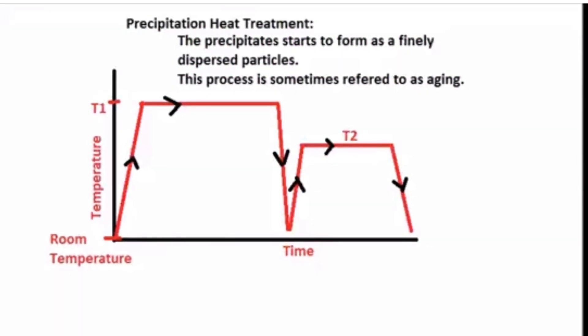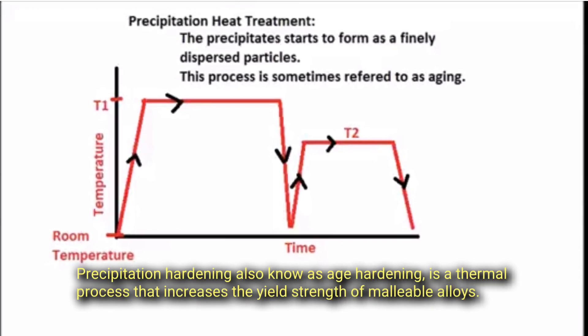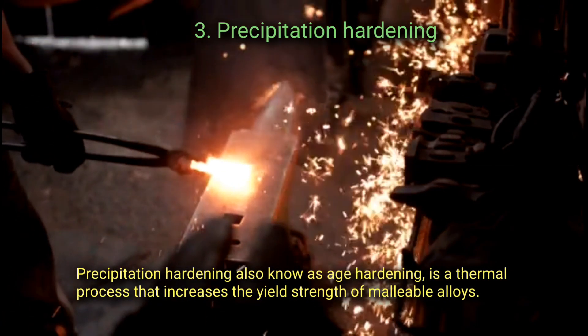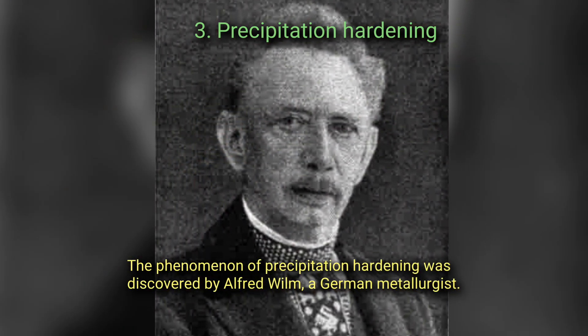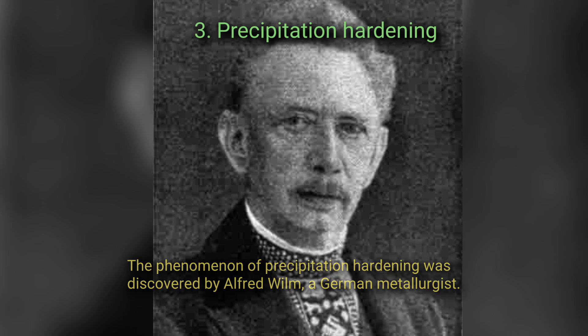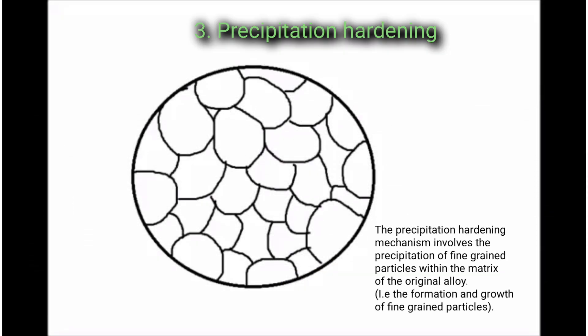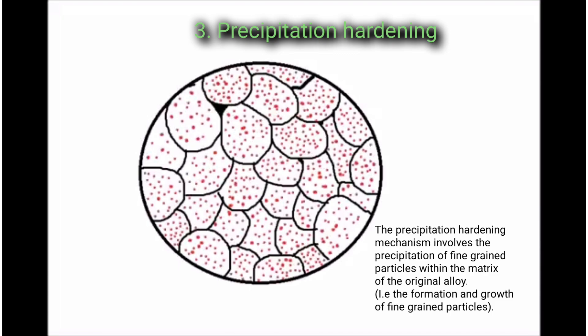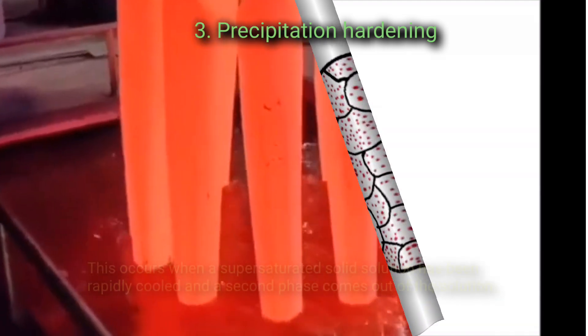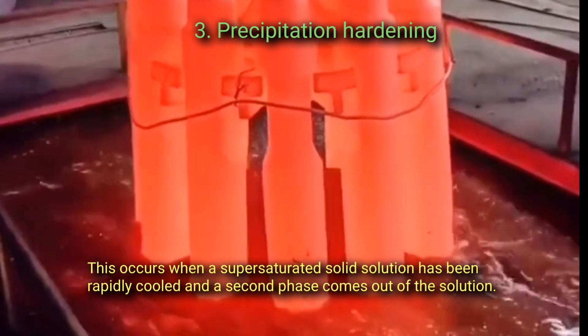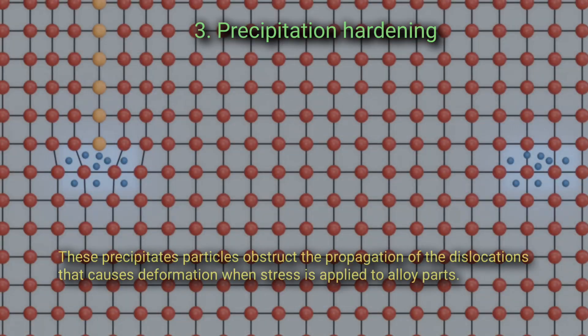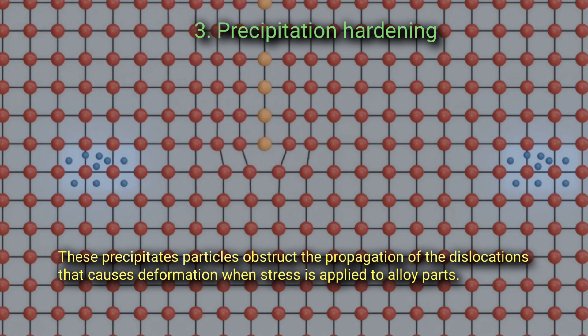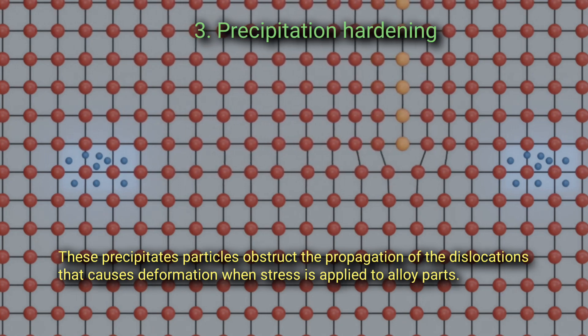Precipitation hardening: Precipitation hardening, also known as age hardening, is a thermal process that increases the yield strength of malleable alloys. The phenomenon of precipitation hardening was discovered by Alfred Wilm, a German metallurgist. The precipitation hardening mechanism involves the precipitation of fine-grained particles within the matrix of the original alloy, that is, the formation and growth of fine-grained particles. This occurs when a super saturated solid solution has been rapidly cooled and a second phase comes out of the solution.